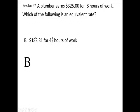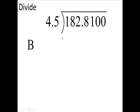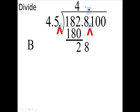Let's try this one. You have 182.81 divided by 4.5. Move the decimal over one place. Scoot it up here. 45 goes into 180 four times. 4 times 45 is 180. Subtract, bring down the 8. It's going to go 0 times. 0 times 45 is 0. Subtract, you're going to get 28.